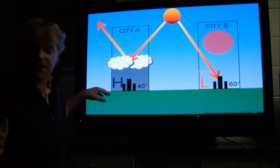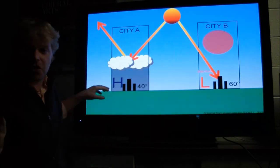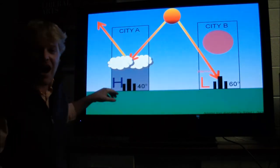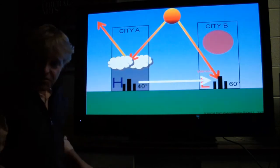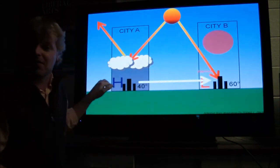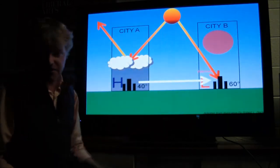So city B is warmer, so we should expect this low pressure to develop. And so subsequently, what we're going to get is a high pressure and a low pressure to form. We're going to get that high to low pressure situation. So we should expect a wind pattern to go from city A to city B.